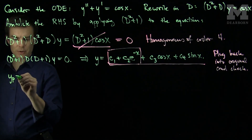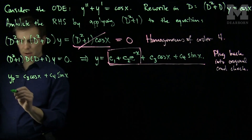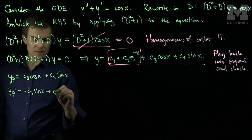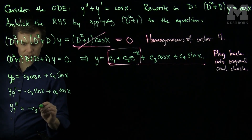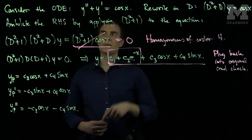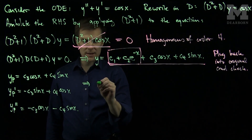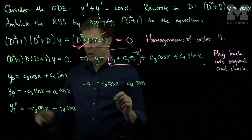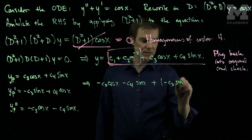We'll call this our particular solution: y_p = c₃cos(x) + c₄sin(x). The first derivative is y_p' = −c₃sin(x) + c₄cos(x), and the second derivative is y_p'' = −c₃cos(x) − c₄sin(x). The equation requires that y'' + y' equals cos(x), so substituting gives (−c₃cos(x) − c₄sin(x)) plus (−c₃sin(x) + c₄cos(x)).